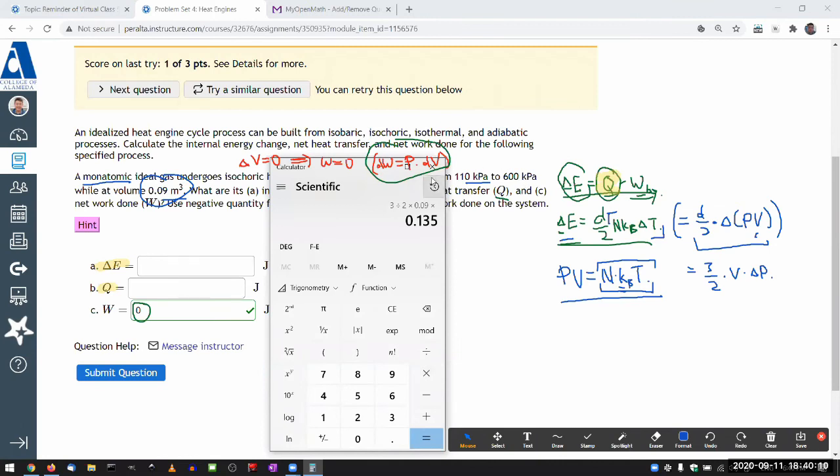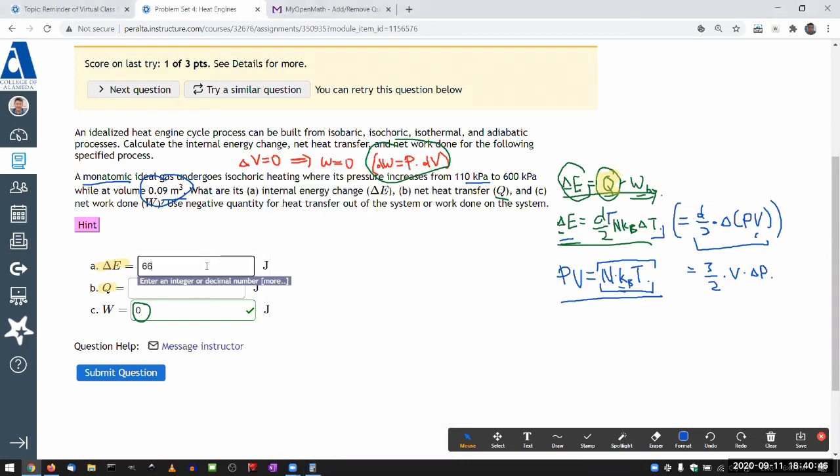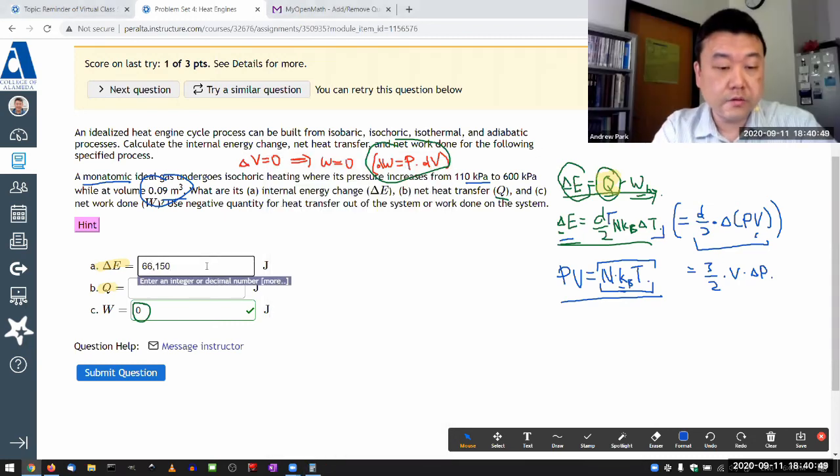I'm just going to do this difference in my head for 490 kilopascal. It's 490 and pascal is the basic SI unit, which means I need to express this as 490 times 10 to the power of 3 pascal. So multiplying that all through, that seems a little high but I think that's right. So the change in internal energy is 66.15 kilojoule or 66,150 joule.